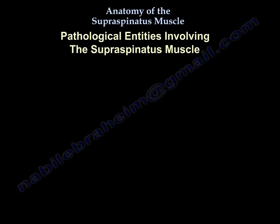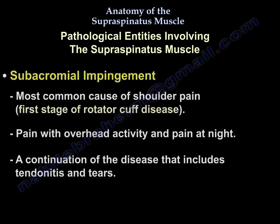Pathologic entities involving the supraspinatus: Number one is subacromial impingement. It is the most common cause of shoulder pain and the first stage of rotator cuff disease. It presents with pain during overhead activity and pain at night. It is part of a continuum of disease that includes tendonitis and tears.